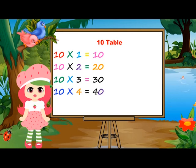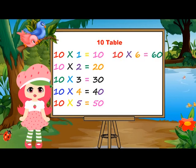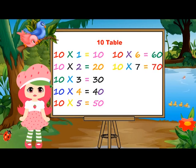10 fours are 40. 10 fours are 40. 10 fives are 50. 10 fives are 50. 10 sixes are 60. 10 sixes are 60.